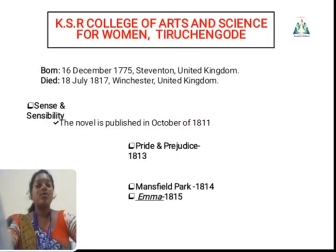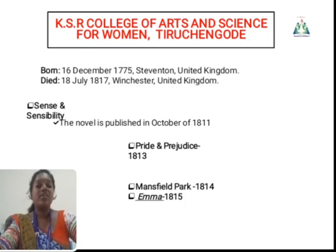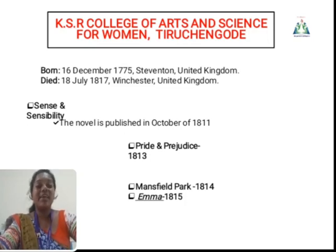She was born on 16 December 1775. She died on 18 July. Her work is Sense and Sensibility, published in October 1811. Pride and Prejudice was published in 1813. Her next work, Mansfield Park, was published in 1814. And Emma was published in 1815.